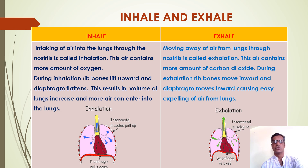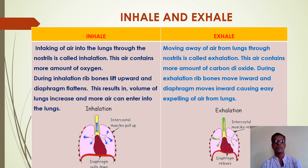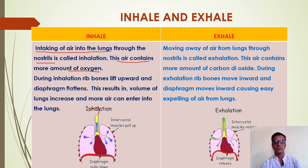In this slide, we are going to discuss about the difference between inhale and exhale. Inhale means the intaking of air into the lungs through the nostrils, and this process is called inhalation. The inhaled air contains more amount of oxygen. As the air enters into the nostrils and then into the trachea, the rib bones move outward direction. Along with the rib bones, the diaphragm also moves outward. The diaphragm is a very thin membrane structure which supports the process of breathing.